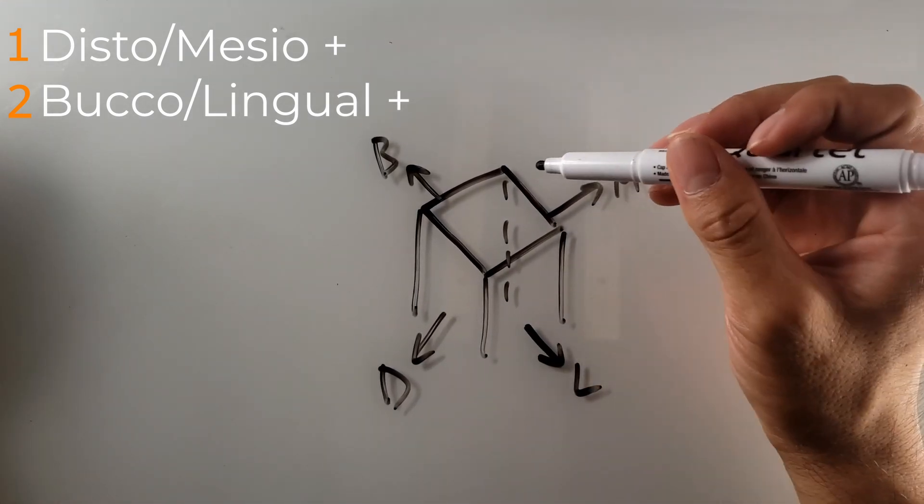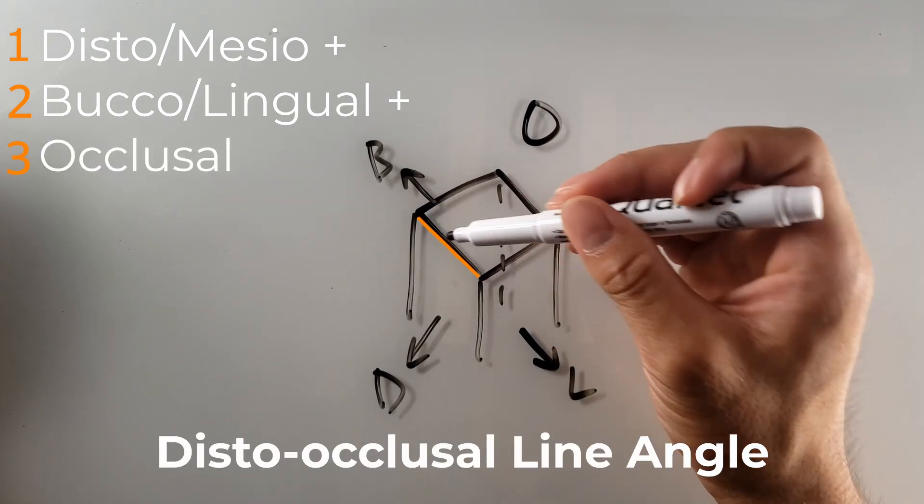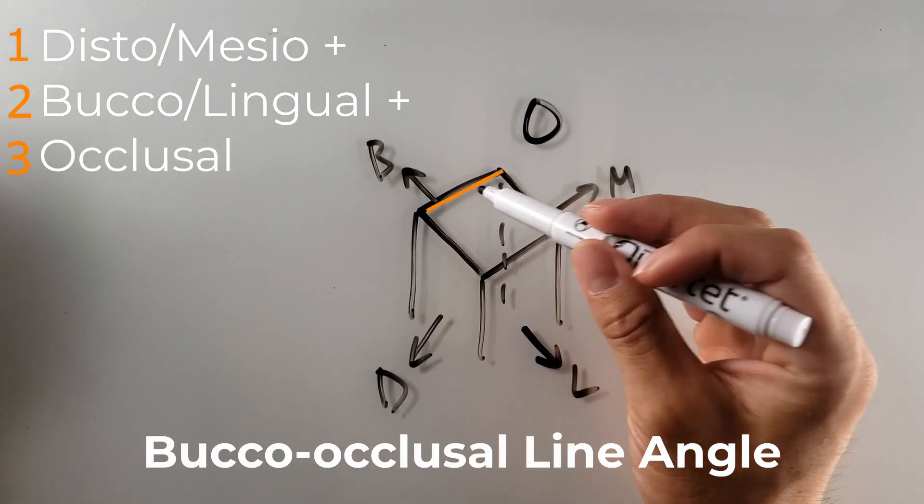Now, since this is a posterior tooth, the top will be referred to as occlusal. So this would be the distal-occlusal line angle, bucco-occlusal line angle.